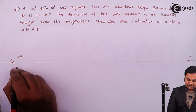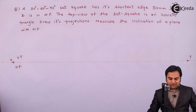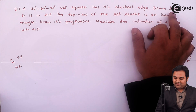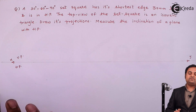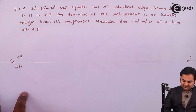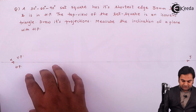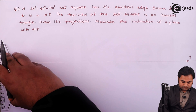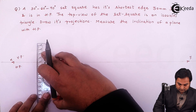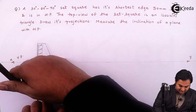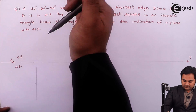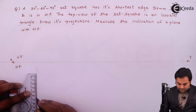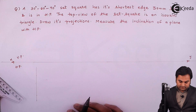Here we have the XY line, and these are VP and HP. The condition given is: a 30-60-90 degree set square has its shortest edge 50 mm long and is in HP. So if the shortest edge is in HP, it means the complete set square is in HP. I'll take that shortest edge and draw it here, then mark 50 mm over it. Only one edge length is given for the set square.